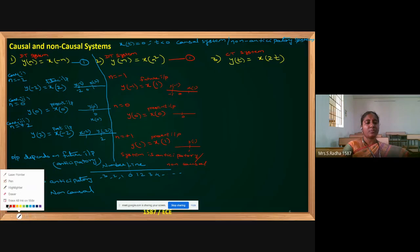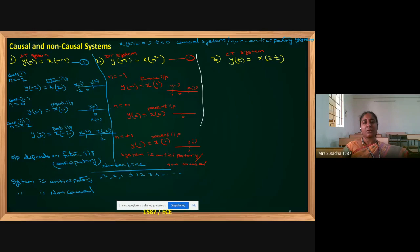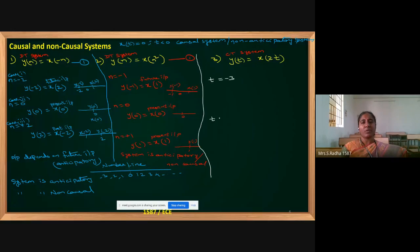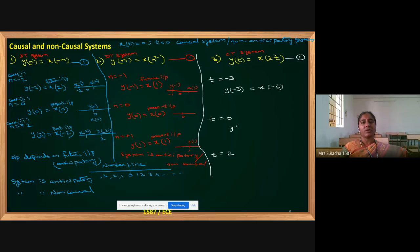Moving to the next problem — a continuous time system where t is the variable. Take any positive, any negative, and one zero value. For example, t = -3, 0, and +2. Rewriting the equation: y[-3] = x[-6], y[0] = x[0], and y[2] = x[4].